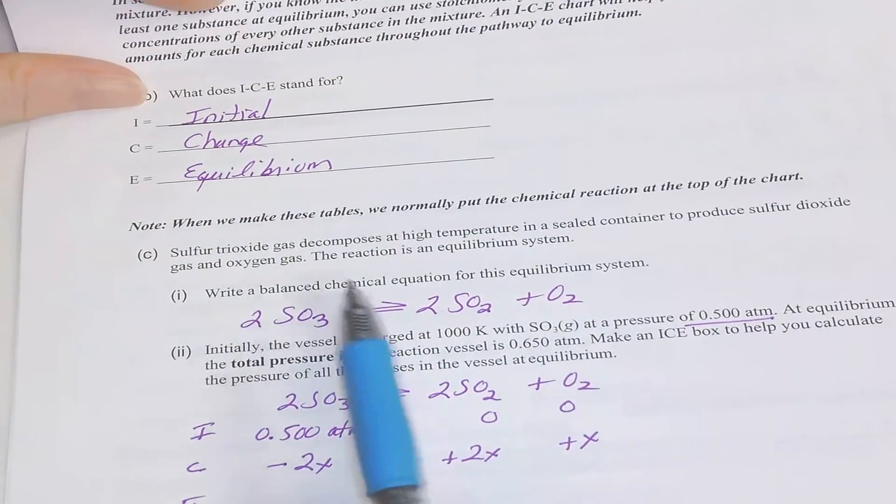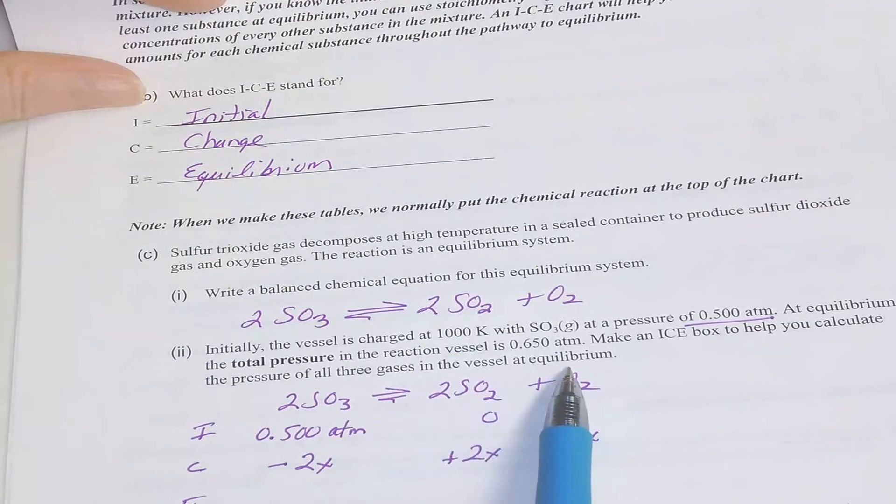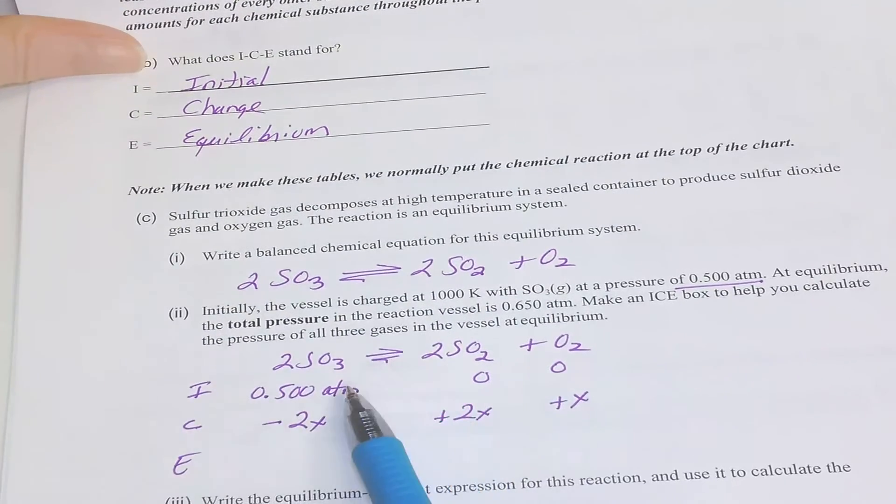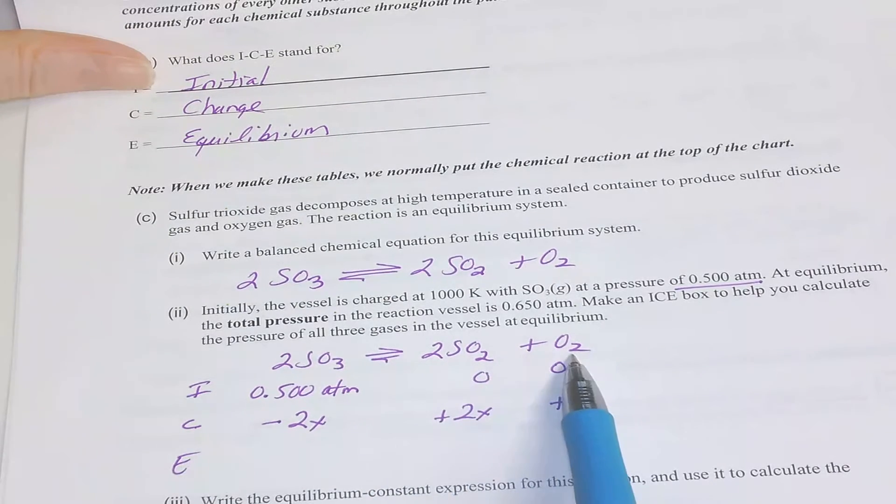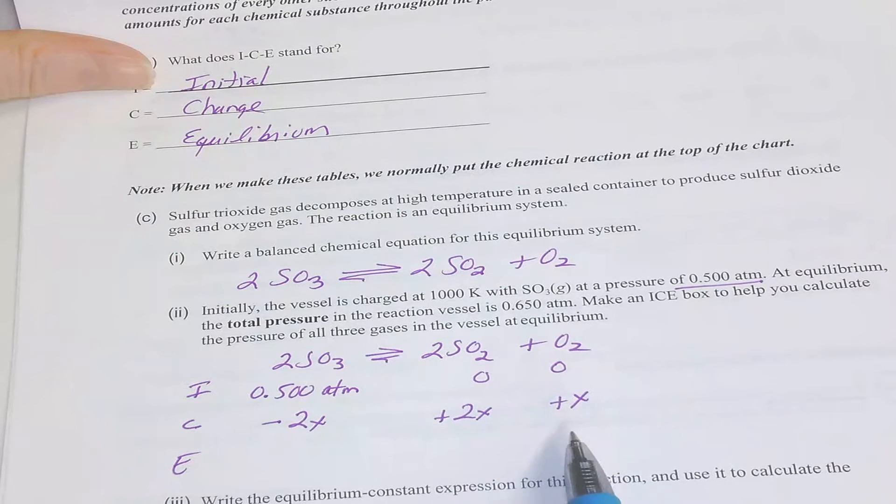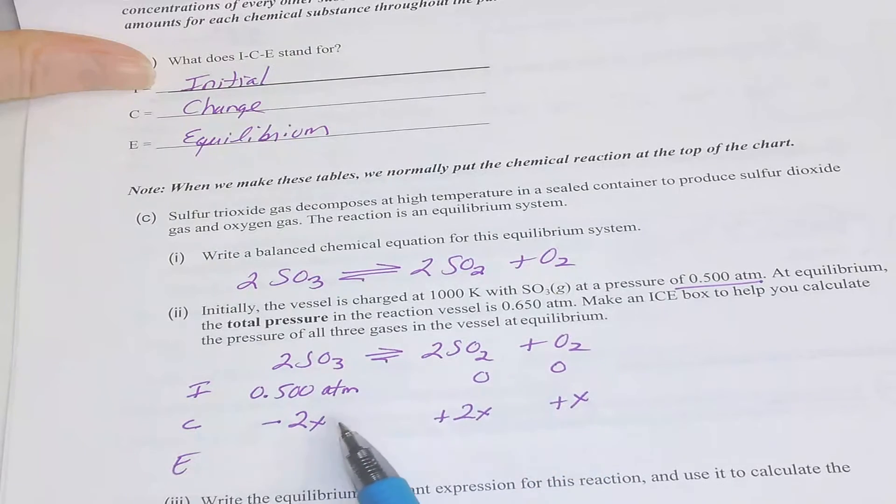When you're doing an ICE problem, you will always write the balanced equation and put that at the heading of your ICE table. You will put your initial values down. If you're not given anything, they're assumed to be zero. Sometimes you're given an equilibrium amount as you were in your handout and you'll be able to figure out that change.